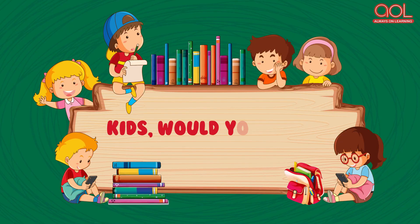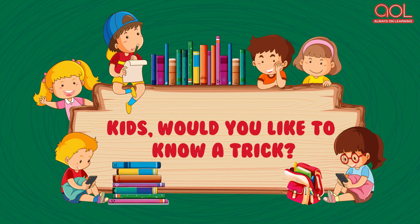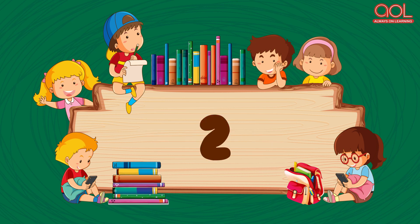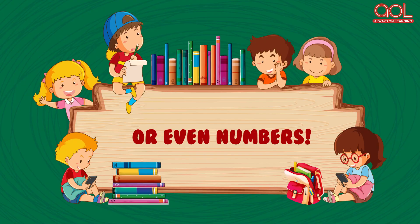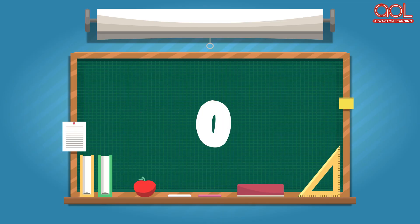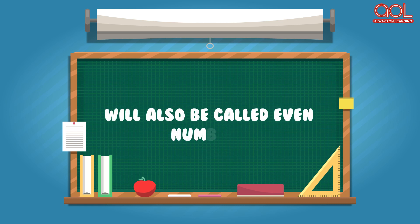Kids, would you like to know a trick? We all know that 0, 2, 4, 6 and 8 are even numbers, right? All numbers higher than these which end with 0, 2, 4, 6 or 8 will also be called even numbers.